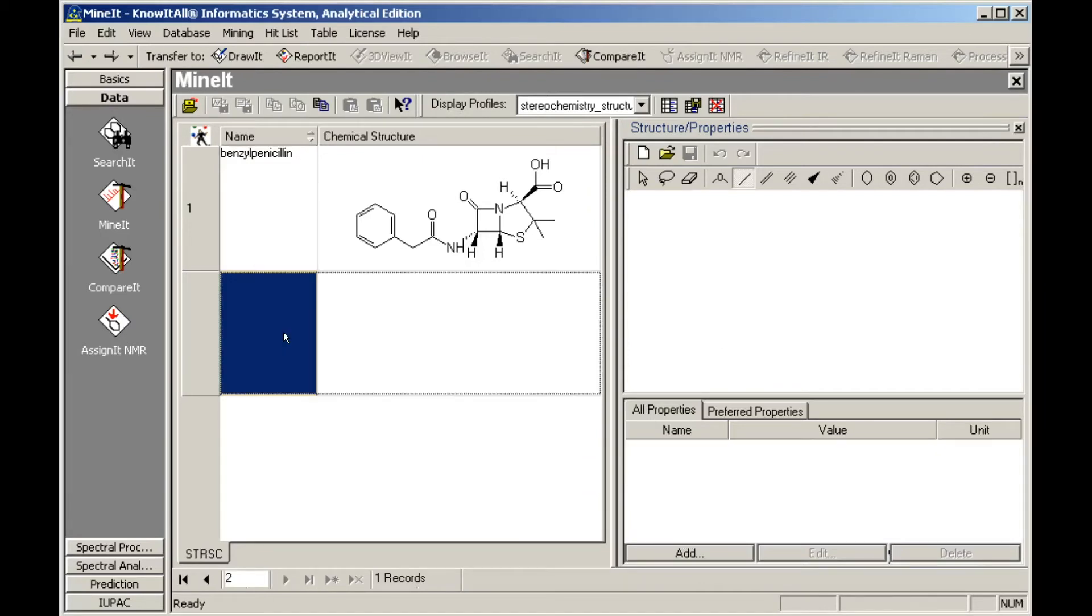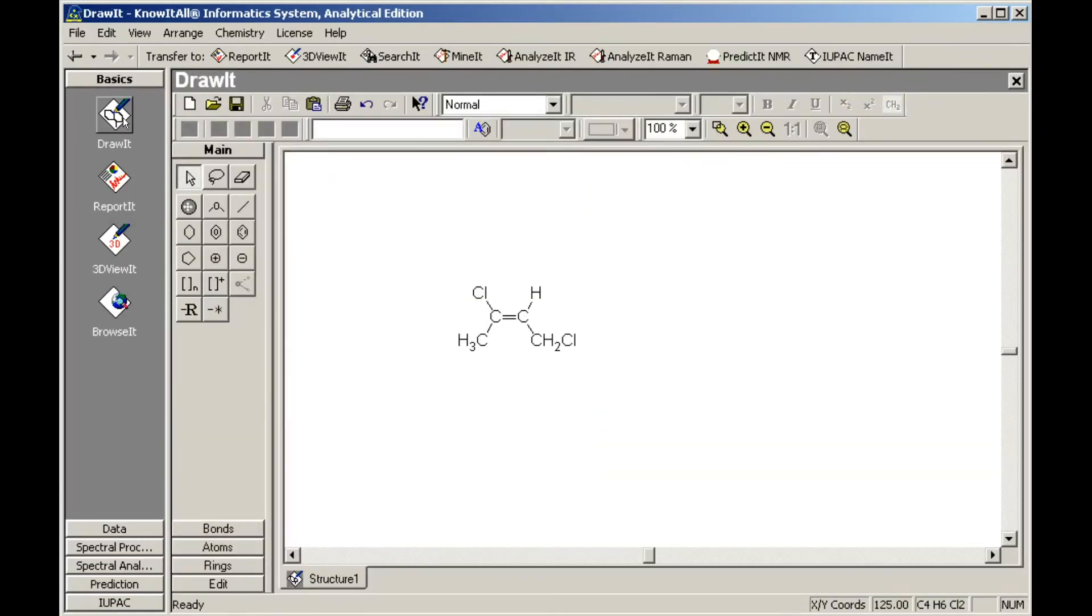Structures can also be added by copying and pasting from another application. For example, from the Draw It application. We will copy this previously drawn structure, then paste it in the Mine It application.